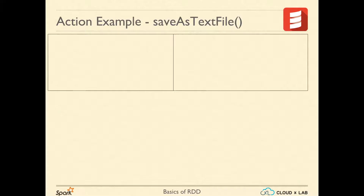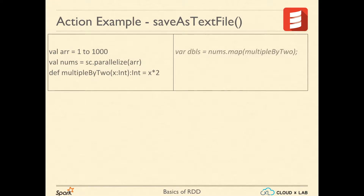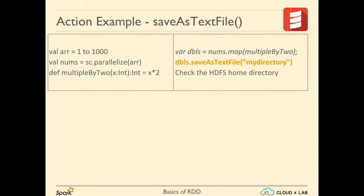Let's take a look. Login to the CloudX Lab web console and start Spark shell. Create an array having a thousand elements, then create an RDD from this array using parallelize. Let's run a map transformation over our nums RDD and then call the saveAsTextFile action with my directory as argument.